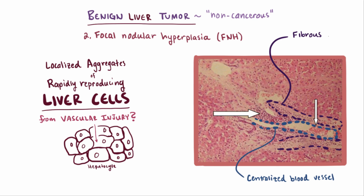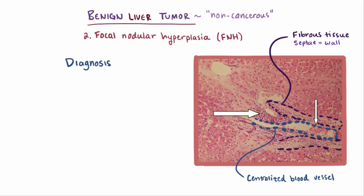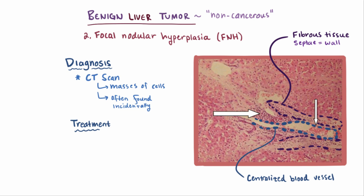On histology, you'll often find this fibrous tissue as well, sometimes called fibrous septae, which means wall or separation. Diagnosis is usually done by a CT scan, where you look for these masses of cells. In almost all cases, focal nodular hyperplasias are found incidentally during some other exam. Unless associated with pain, these benign tumors are typically left alone.